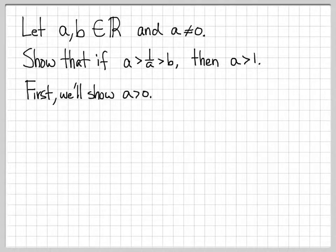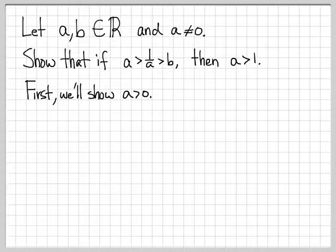First, we're going to show that a is greater than 0. Establishing whether a variable is positive or negative is useful when working with inequalities because when you multiply both sides of an inequality by a positive number, you keep the inequality sign the same. But if you multiply by a negative number, you have to flip the direction of the inequality — less than, less than or equal to, greater than, greater than or equal to.